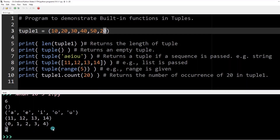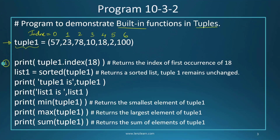In the first print statement of the next program, I call the built-in function index() on tuple1. This function returns the index value of 18 stored inside tuple1. You can see value 18 is stored at index 4, so this print statement will print the result as 4.